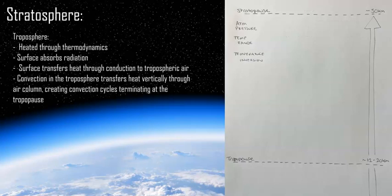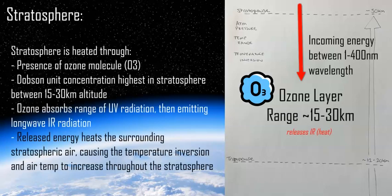The troposphere, the first layer below the stratosphere, heats up close to the surface because of radiation, conduction, and convection of thermal energy at the surface, where the air is heated by the warmer Earth's surface. The stratosphere, however, is not near the surface — it heats up through absorption and emission of thermal energy. It absorbs ultraviolet radiation through a molecule called ozone, which is itself formed through ultraviolet light and photons, and this absorption releases infrared thermal energy into the atmosphere.